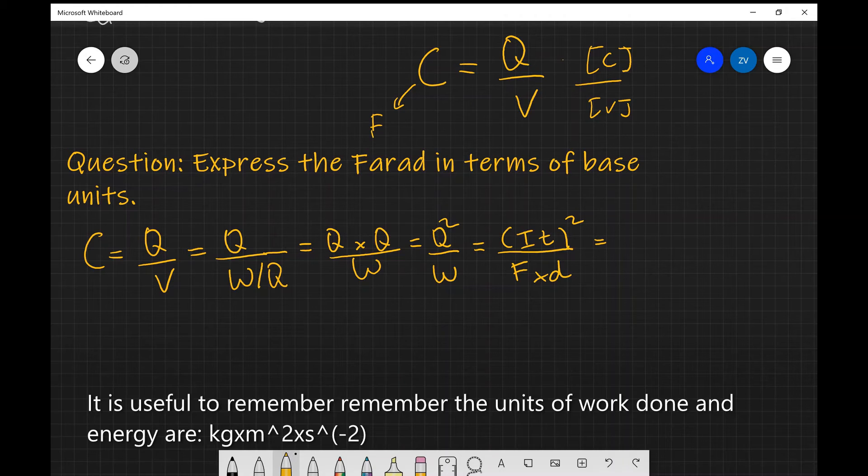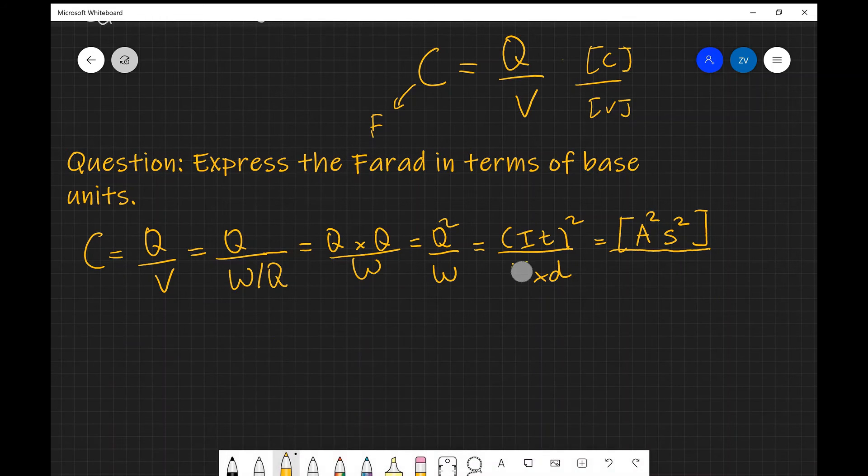So the units for the current are amps squared multiplied by seconds squared. These are the units on the top of the fraction, and we're going to divide that by the units of force. Remember, force is just mass times acceleration.